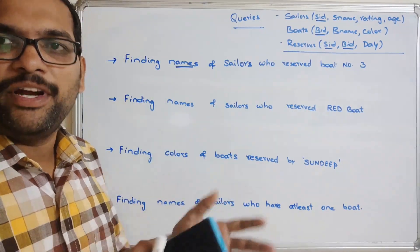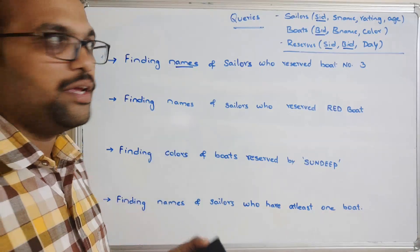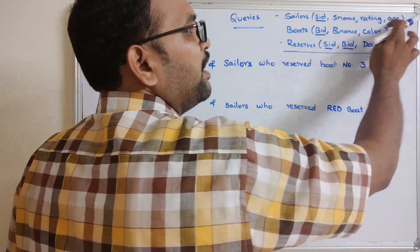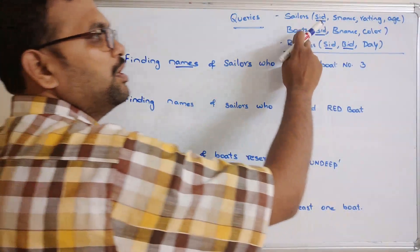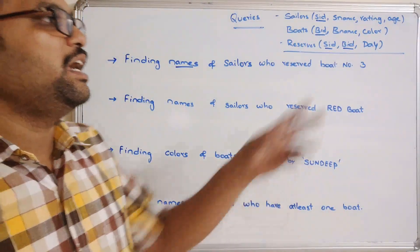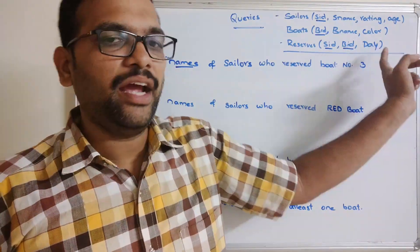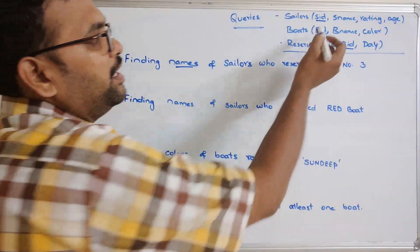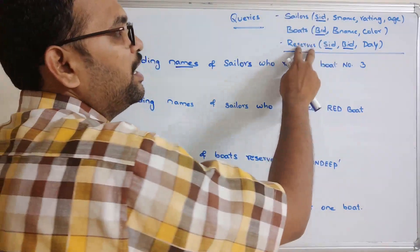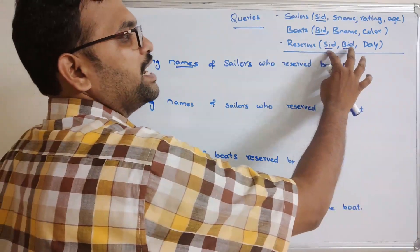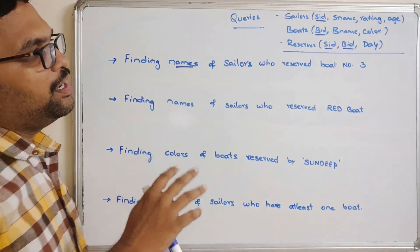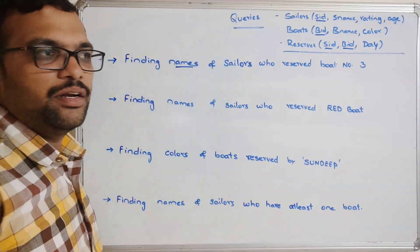Relating one table with another is done with the help of a foreign key. The sailors table has attributes: sid, sname, rating, and age. The boats table has: boat_id, boat_name, and color. The reserves table has: sid, bid, and day. In sailors, sid is the primary key; in boats, bid is the primary key; and in reserves, sid and bid together form the primary key and also act as foreign keys.